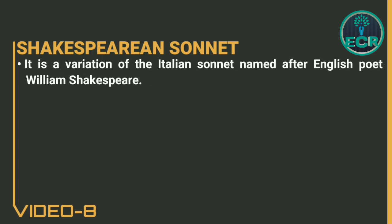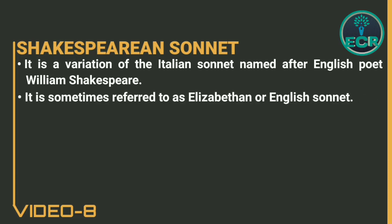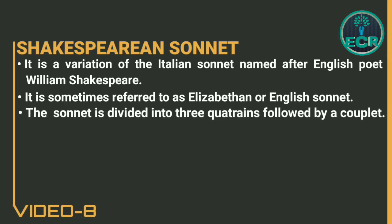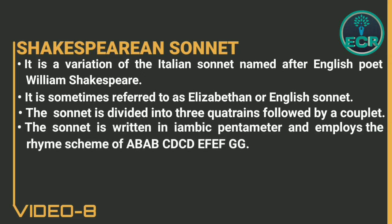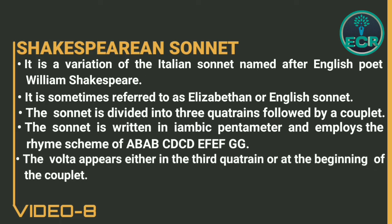Next we have the Shakespearean sonnet. It is a variation of the Italian sonnet named after English poet William Shakespeare. It is sometimes referred to as the Elizabethan or English sonnet. The sonnet is divided into three quatrains followed by a couplet. It is written in iambic pentameter and employs the rhyme scheme of ABAB CDCD EFEF GG. The Volta appears either in the third quatrain or at the beginning of the couplet.